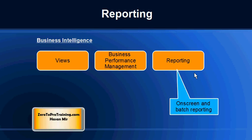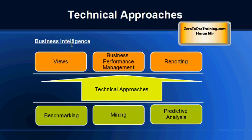Business intelligence software helps management track KPIs over time. Reporting functionality provided by BI software includes online reports — sometimes also known as inquiries or online queries — and also batch reporting, where you submit a report, wait for it to finish, and then review the output.